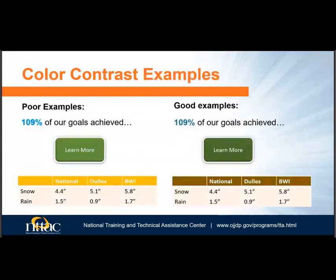Here are examples of poor color contrast and good color contrast. It will be more difficult for someone with low vision to see the example on the left and easier to see the examples on the right. Light blue on white is harder to read than a darker blue. Green and white combinations are all problematic, but you can use a darker green and pass the color contrast requirement. Any shade of yellow and white will fail for color contrast, so use a different color instead, such as brown.